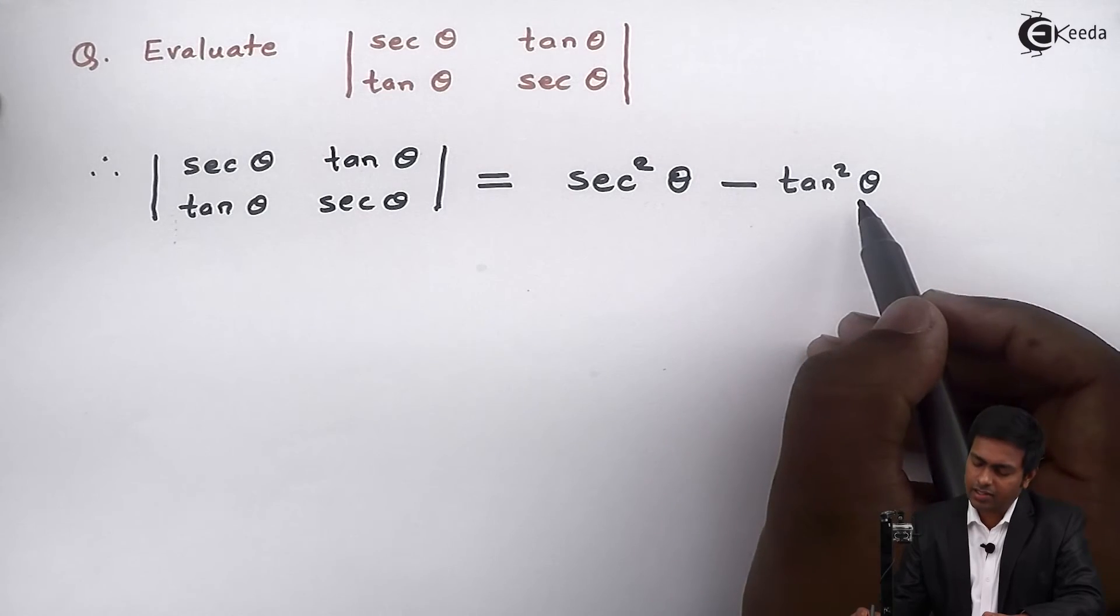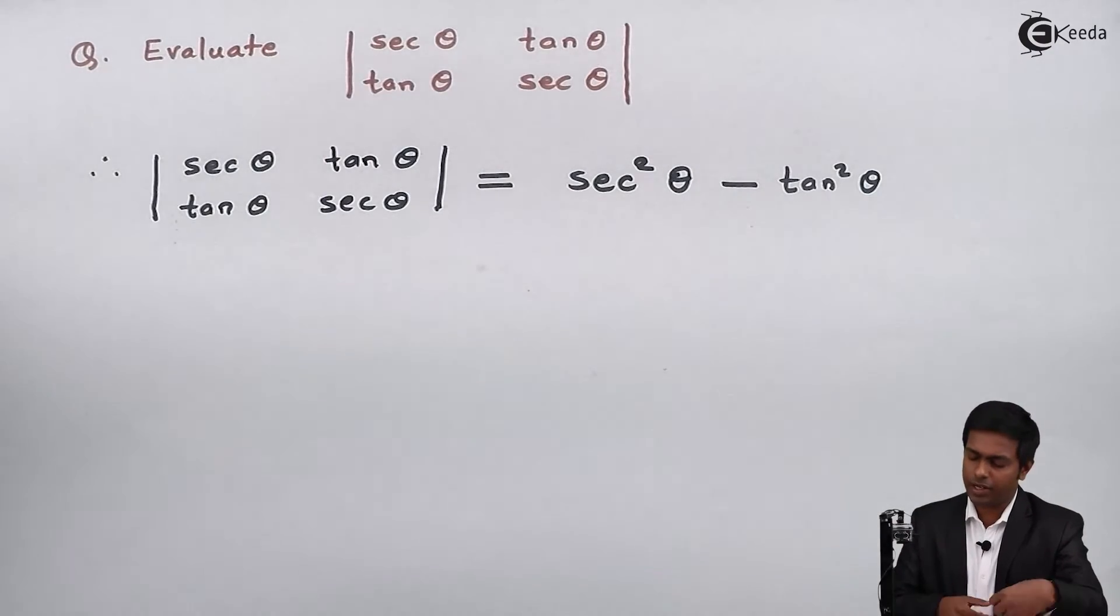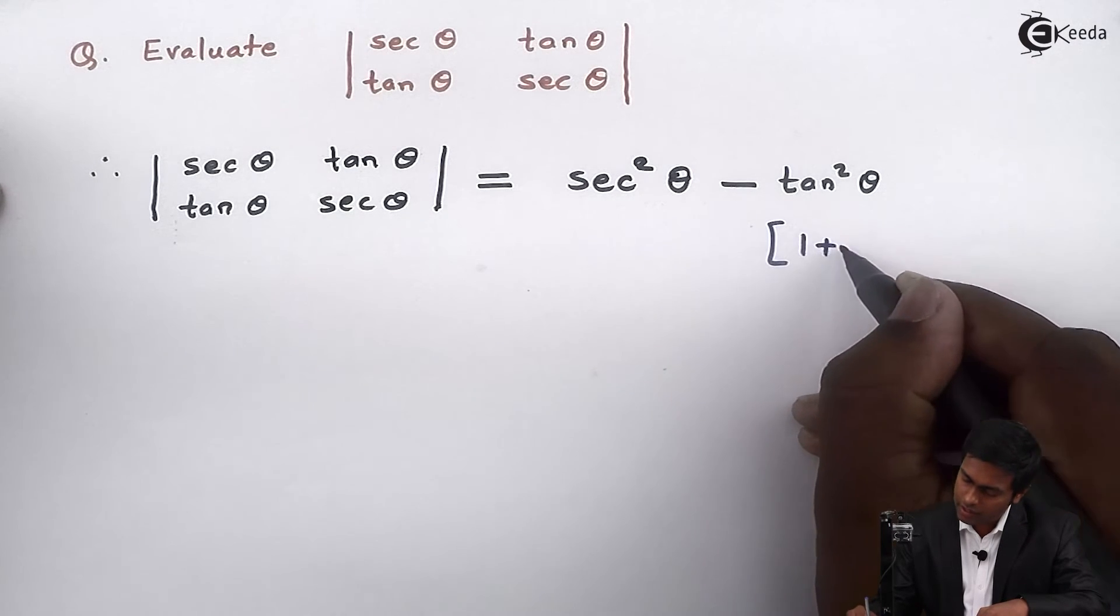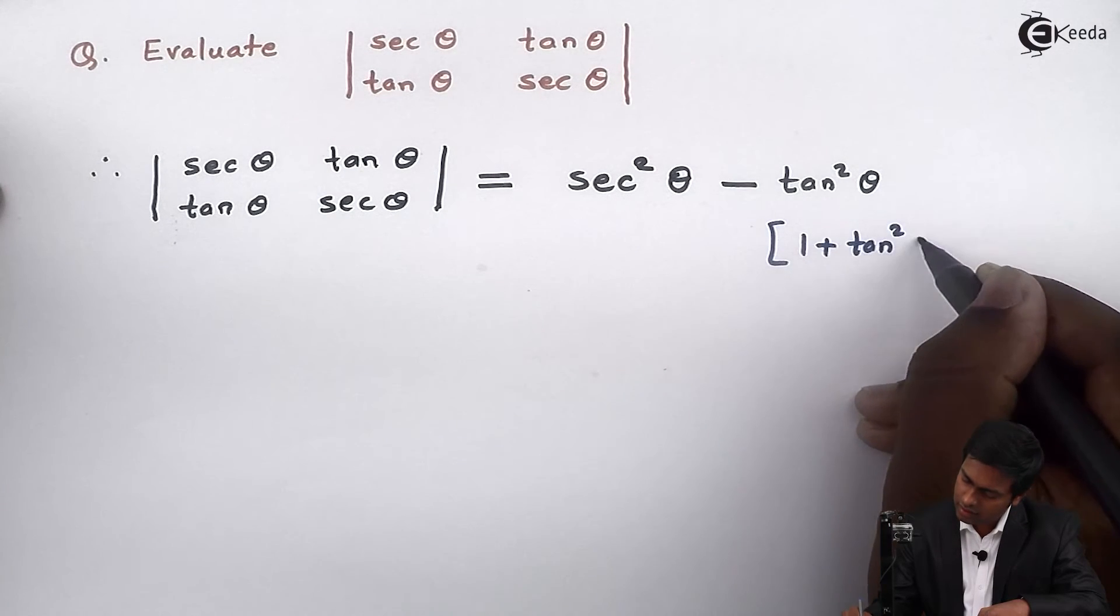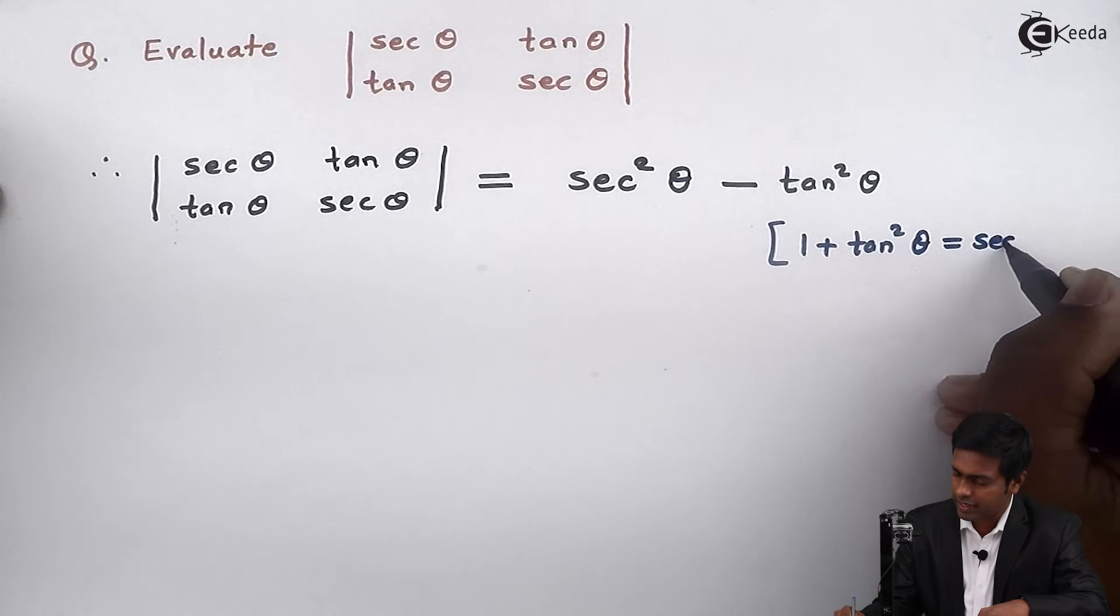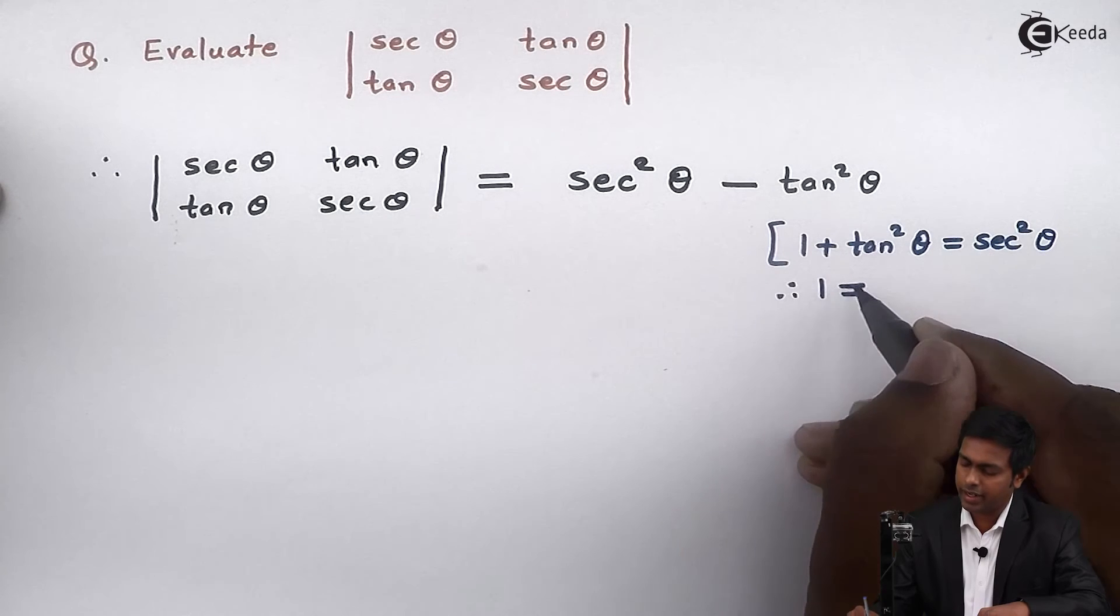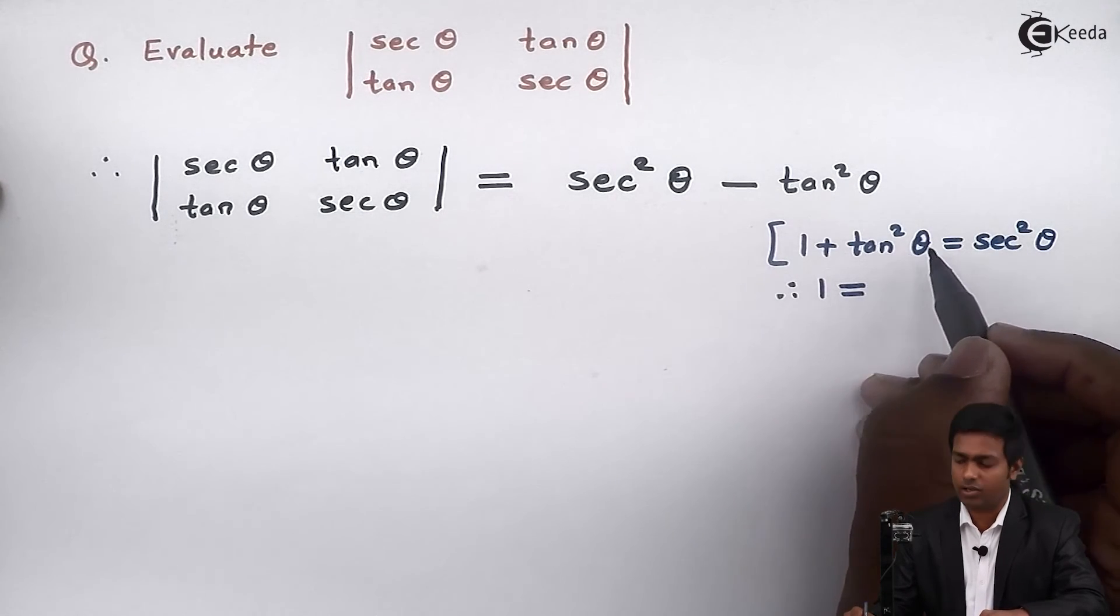So now to get the answer I will use one trigonometric formula here. So we all know that 1 plus tan square theta is equal to sec square theta, and therefore if I will take this tan square theta on